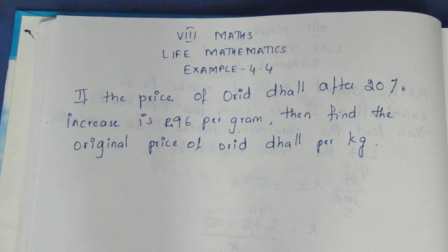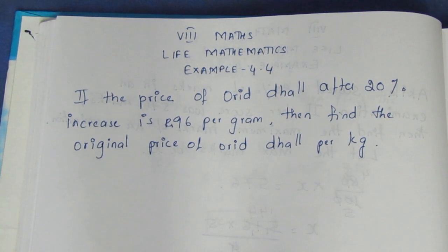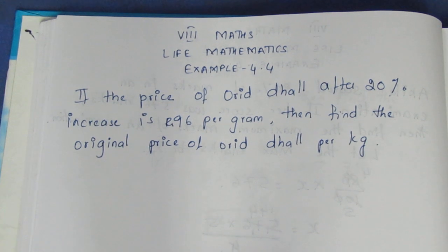If the price of Urad dhal after 20% increase is Rs. 96 per gram, then find the original price of Urad dhal per kg.